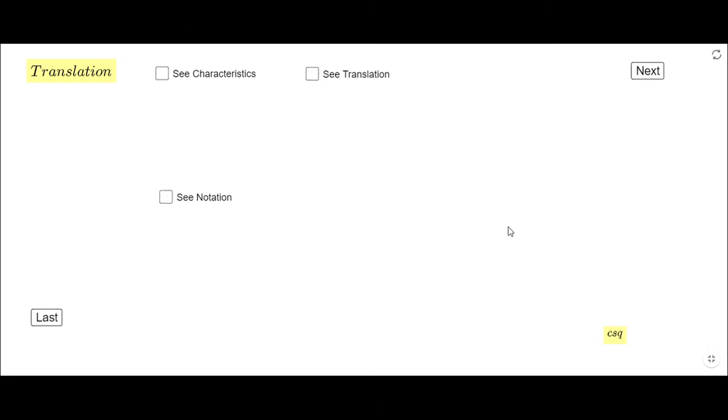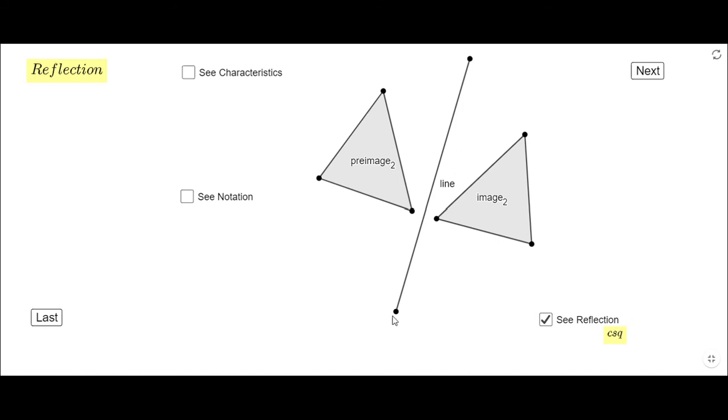We're going to move to the next slide which is another rigid transformation, rigid motion, or congruent transformation. You can use all these three names and it's called reflection. Let's see the reflection first. You notice here we have a line and then that line is like a mirror.